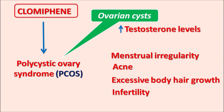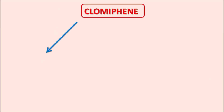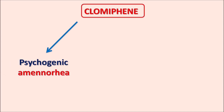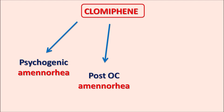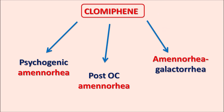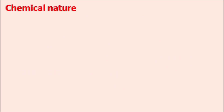Clomiphene can induce ovulation and increase fertility in such women. It can also be given for amenorrhea — including psychogenic amenorrhea caused by mental stress, post-oral contraceptive amenorrhea, and amenorrhea associated with galactorrhea. In all these conditions, clomiphene is given to induce ovulation.